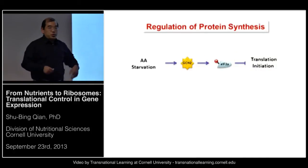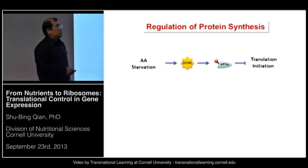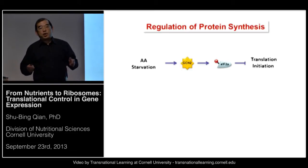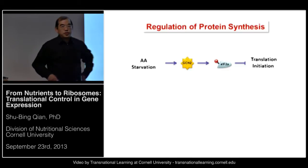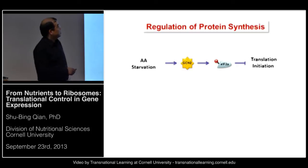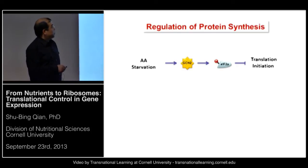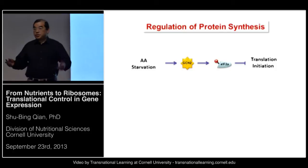Similarly, when we withdraw amino acids under starvation, it inevitably inhibits protein synthesis — and this mechanism has been quite well understood. During starvation, accumulated uncharged amino acids trigger and activate GCN2 kinase. GCN2 is able to phosphorylate initiation factor eIF2α and then reduce ternary complex formation; as a result, global protein synthesis is decreased.